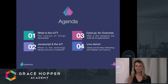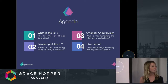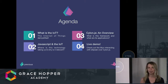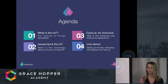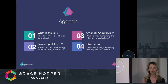Over the course of these next 10 minutes, we're going to learn about what is the Internet of Things and how it's relevant to our lives. We'll talk about JavaScript and why it's a great language for the Internet of Things and what you can make with it. Then we'll dive into Cylon.js, a really great framework that makes developing applications for the Internet of Things simple and easy. And we'll top it off with a live demo showing how you can use the Myo wristband to create a robot.